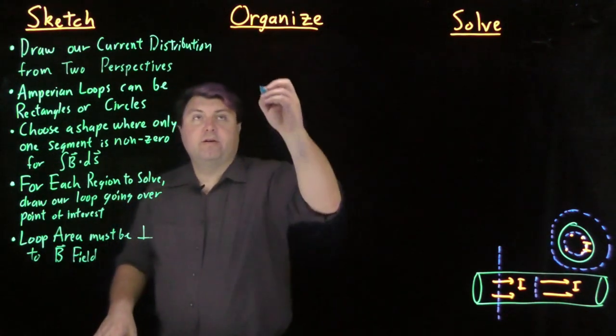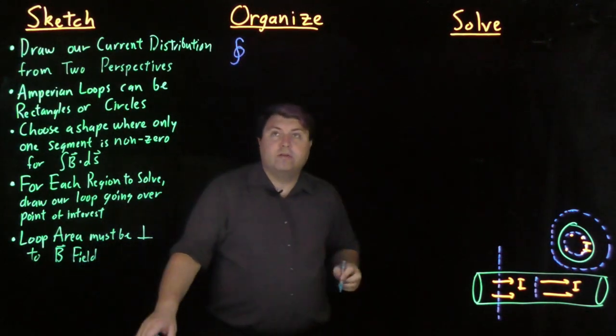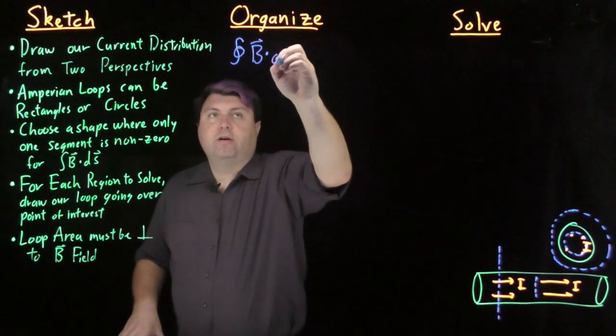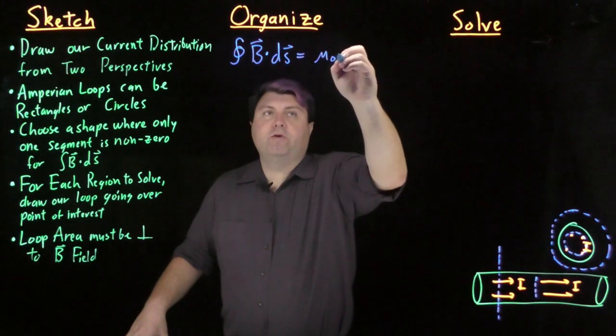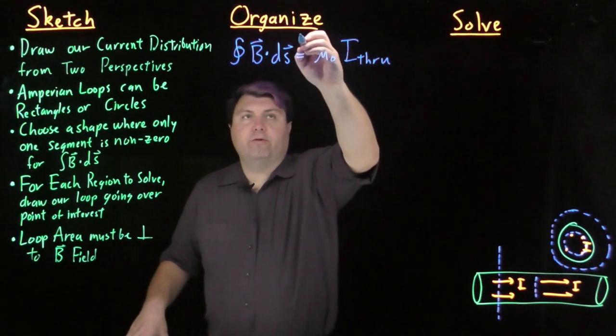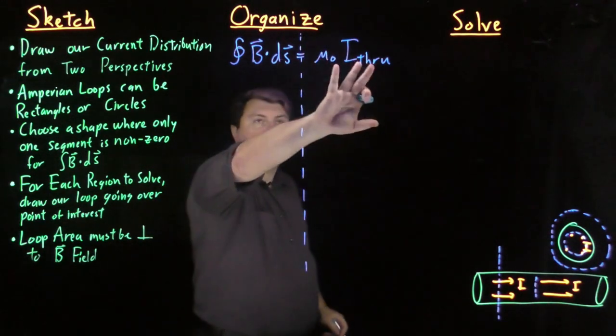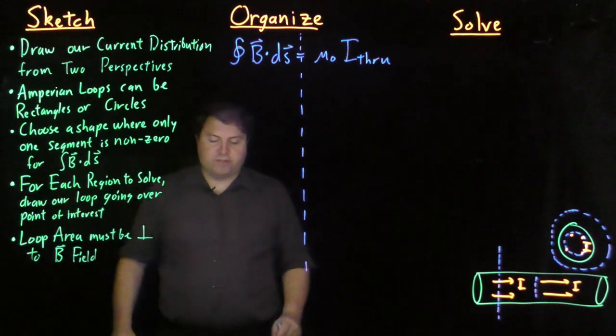In my organized step, I have my integral, which is the closed integral of B dot ds equals mu naught times the current through. What we're going to do is we're going to work on both parts of this equation and bring them together in the solve step.